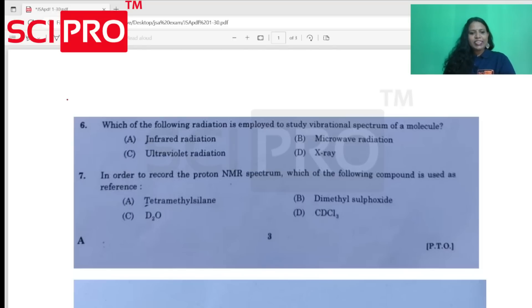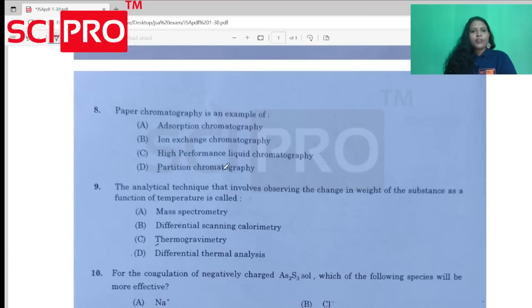First question, question number 6: Which of the following radiation is employed to study vibrational spectrum of a molecule? The answer: infrared radiation. Question number 7: In order to record the proton NMR spectrum, which of the following compound is used as reference? The answer is tetramethylsilane. Question number 8: Paper chromatography is an example of partition chromatography.